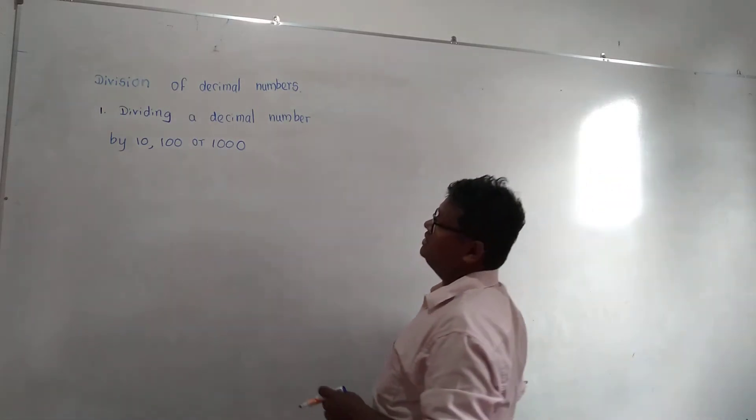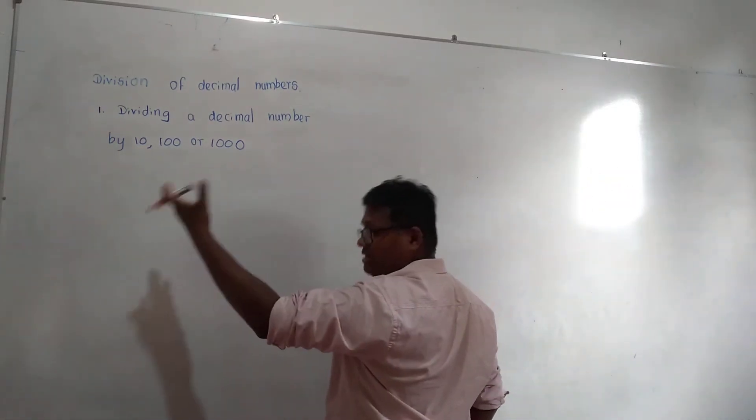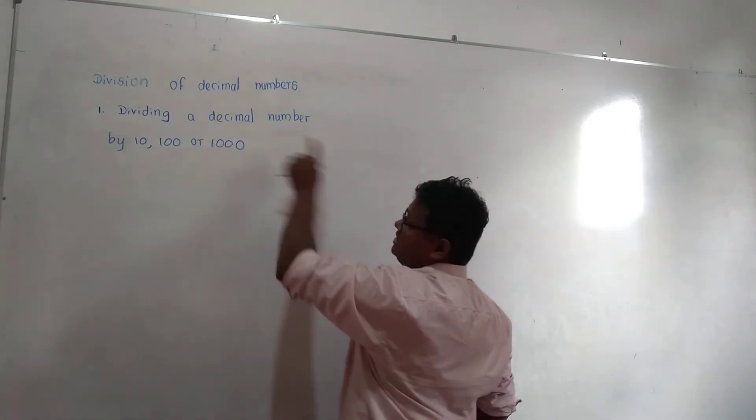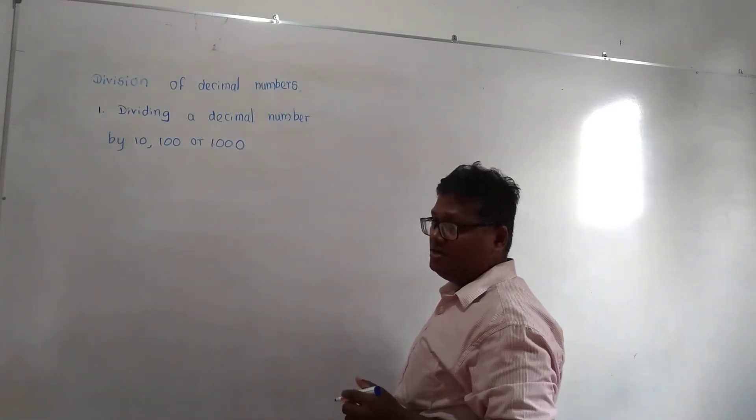Division of decimal numbers. Like in multiplication, in division also we have two parts: dividing the decimal number by 10, 100, or 1000.